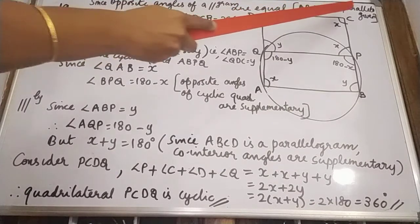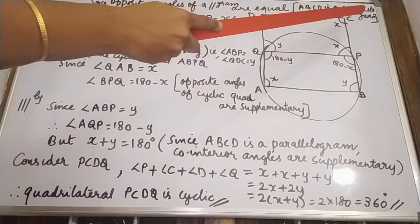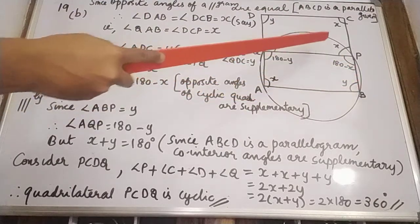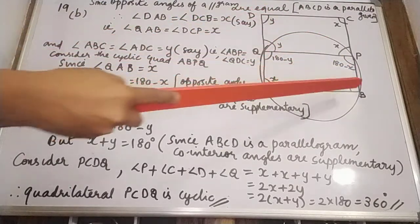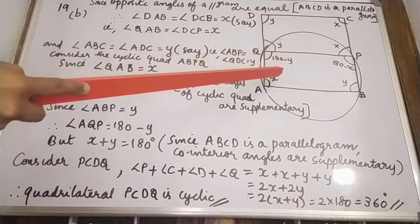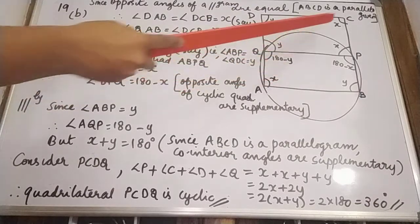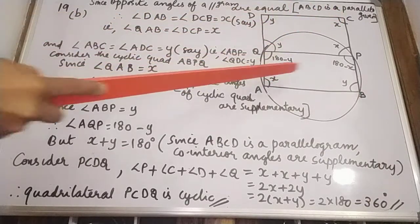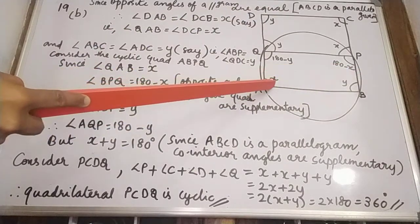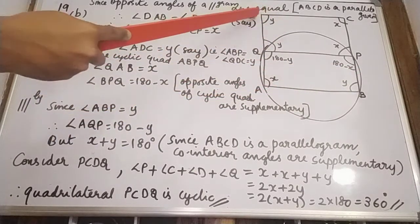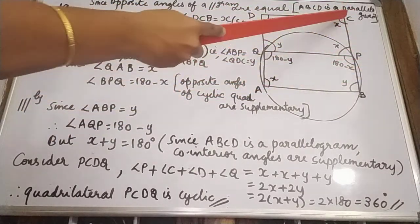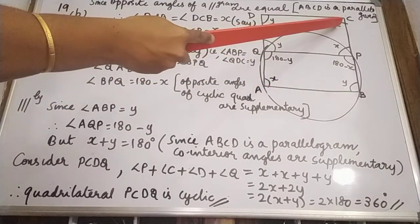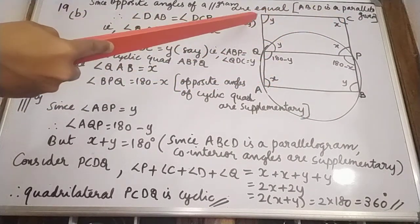Given that ABCD is a parallelogram, look at this figure. Opposite angles of a parallelogram are equal, so we can write angle DAB equal to angle DCB. Let these two equal angles be X.